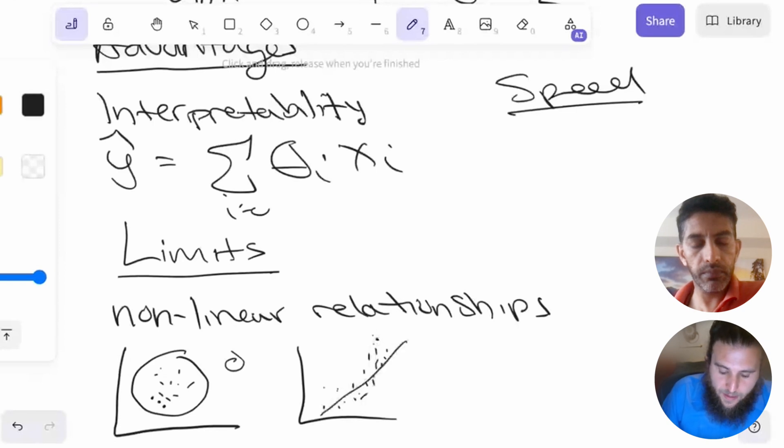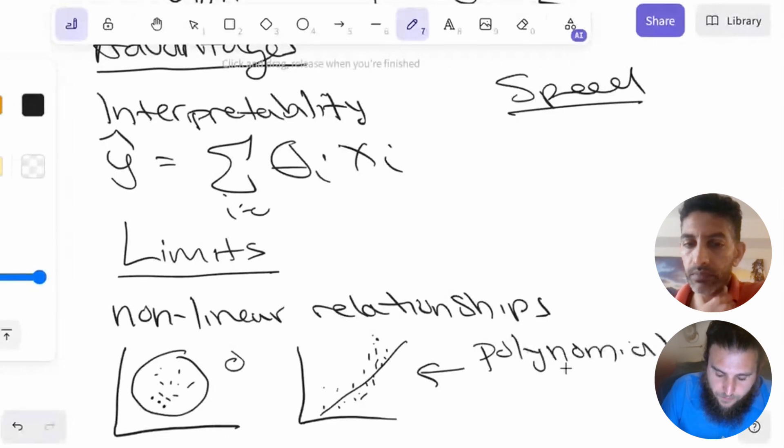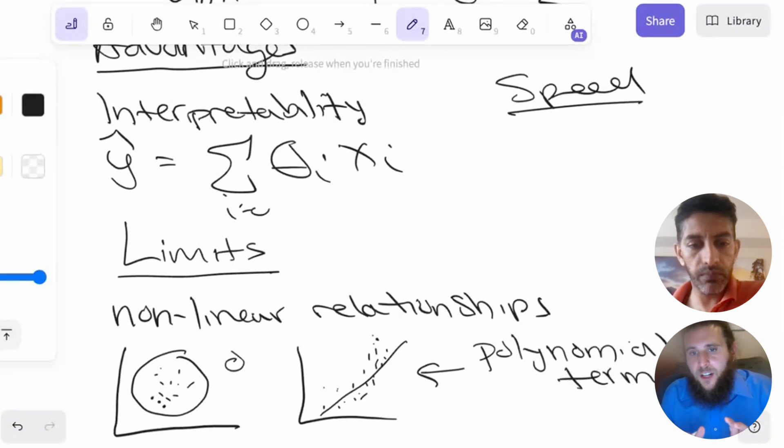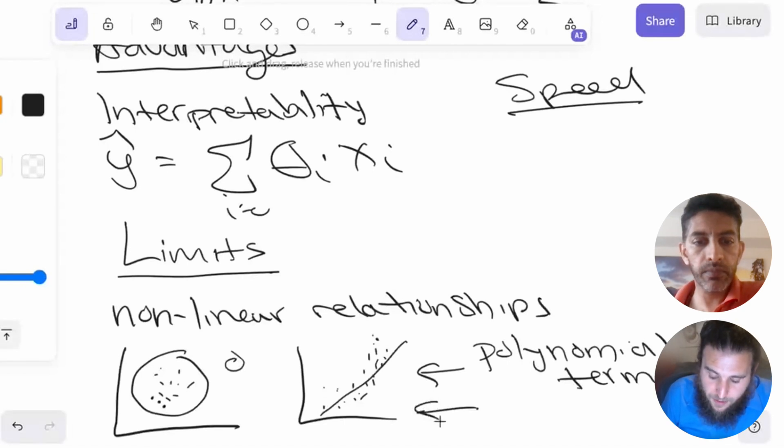This can also look like you have polynomial terms where you have these sorts of relationships where a line isn't going to capture that. You can solve this by using polynomial terms. You can also look at interactions between variables. Sometimes variables will interact with each other in a way that affects how that variable affects a target variable. Two features together, depending upon the value of a different feature, might affect the effect of a target on another variable. Linear regression has a hard time dealing with that, but you can introduce interaction terms as well.